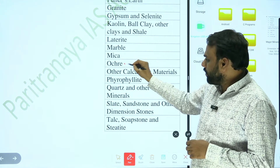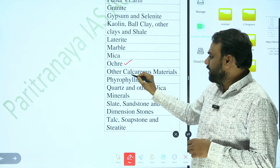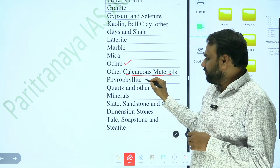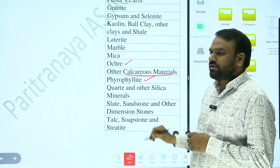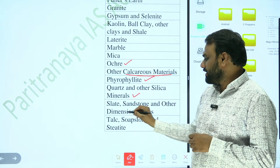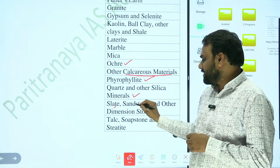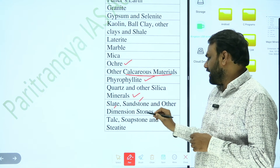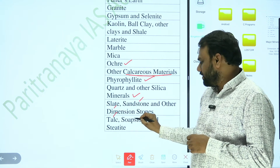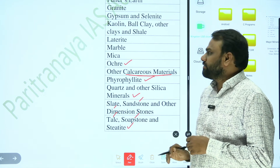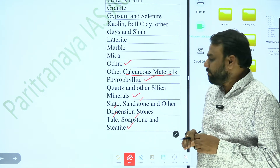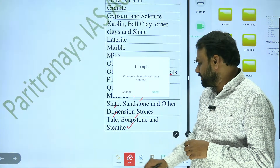Next, ocher, other calcareous materials, pyrophyllite, quartz and other silica minerals, slate, sandstone and other dimension stones, talc, soapstone and steatite. All these are considered as minor minerals.